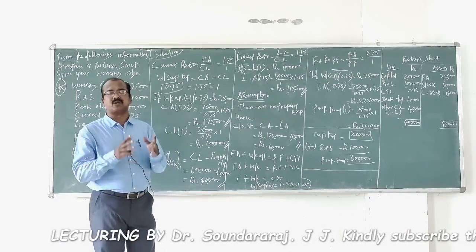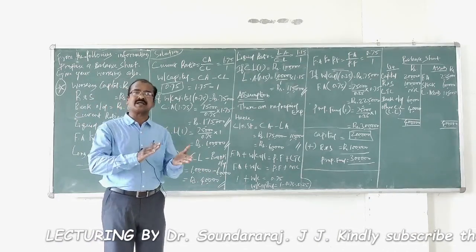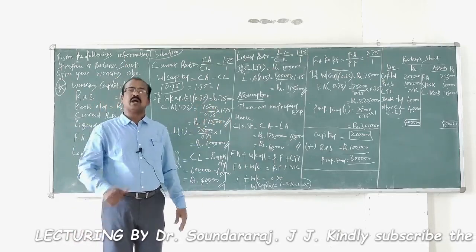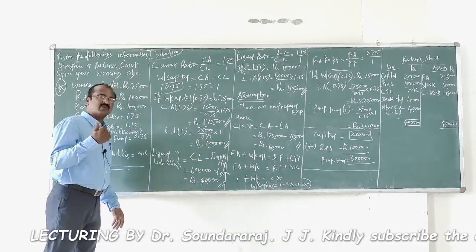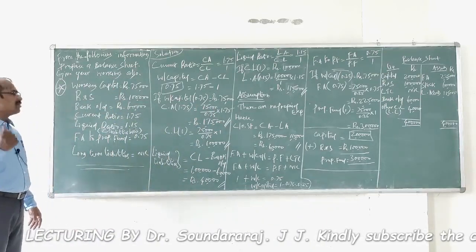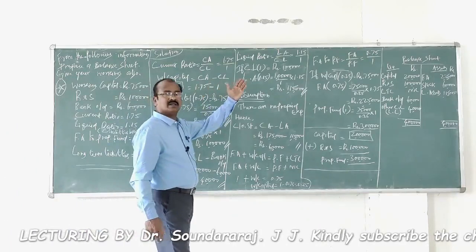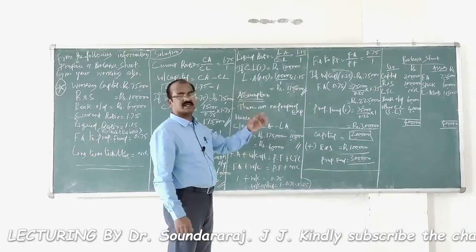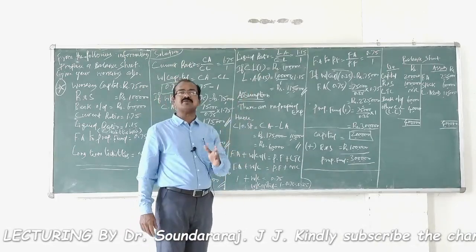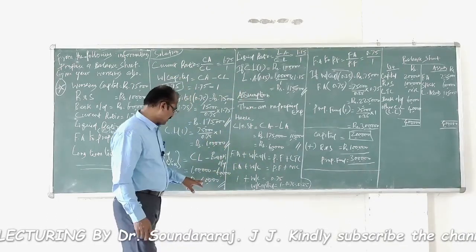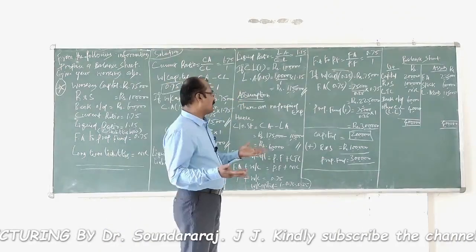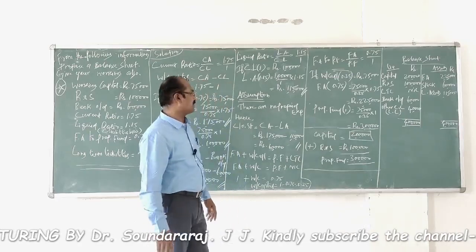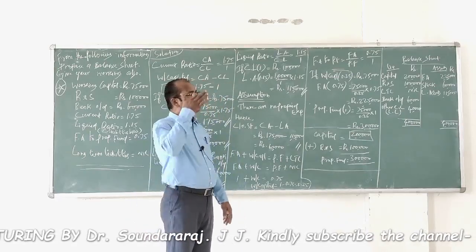Normally, liquid ratio uses liquid liabilities, but since we are directed to use current liabilities as the basis, the formula becomes: Liquid Ratio = Liquid Assets / Current Liabilities = 1.15/1. Since current liabilities = ₹1,00,000, liquid assets = 1,00,000 / 1 × 1.15 = ₹1,15,000.